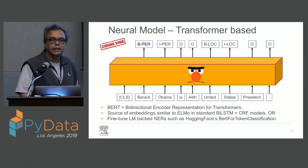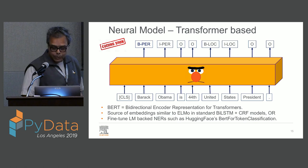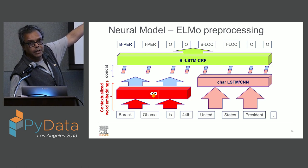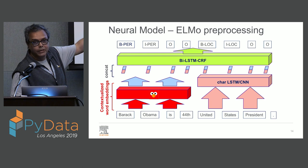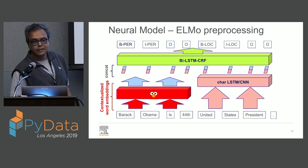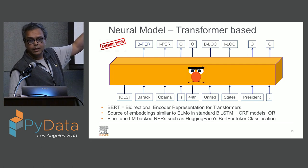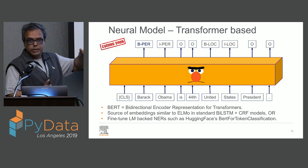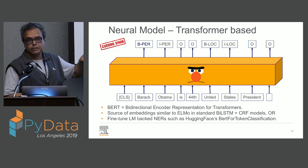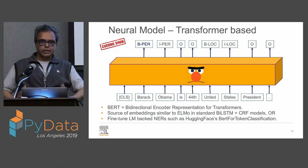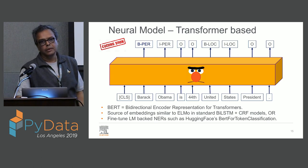An audience member asks: is this using BERT vectors on top of a classifier? The speaker clarifies: replacing ELMo with BERT just extracts pre-trained BERT vectors into a CRF. But for the fine-tuning approach, BERT itself handles everything — it's end-to-end, like a sequence-to-sequence model. You fine-tune the language model to take in tokens and return tags, leveraging BERT's understanding of sentence structure. This is still in the works and should arrive around January or February.